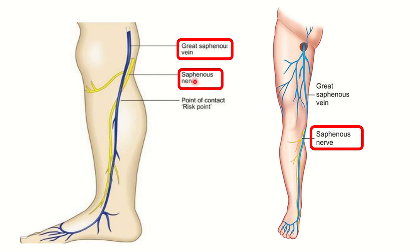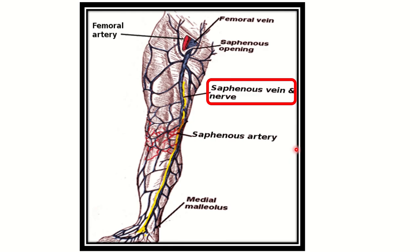Here we can clearly see this nerve — it is the saphenous nerve. The saphenous nerve travels along the great saphenous vein. Here we can see it in the ankle area and above. In the second picture we can also see the saphenous nerve, which is very close to the great saphenous vein. During stripping of the great saphenous vein, there is every chance of injury to this saphenous nerve.